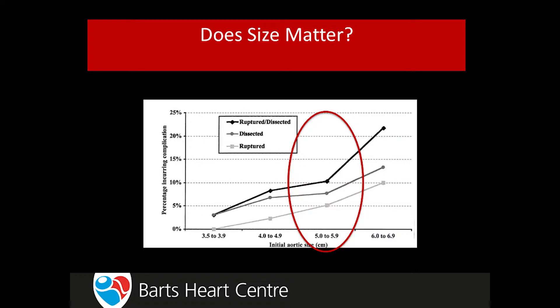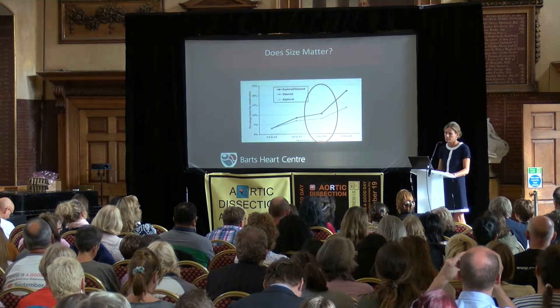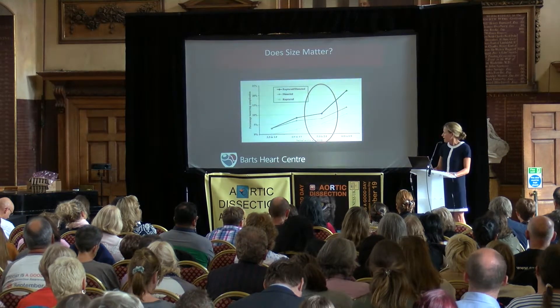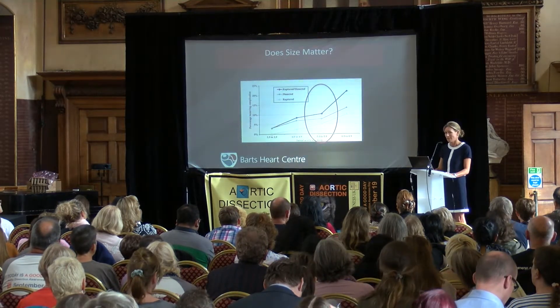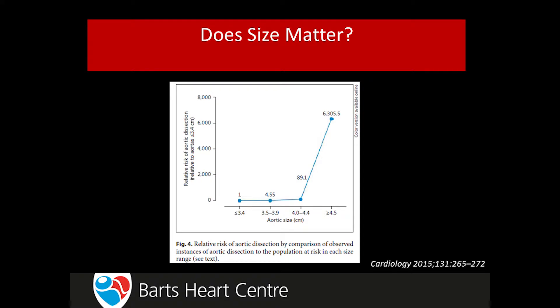Does size matter? There was good retrospective data from the 1990s from the Yale group showing a significant increase in risk of dissection as aortic size increased. That guided the initial guidelines that ascending aortas should be replaced at 5.5 centimeters. Dissections do happen at smaller sizes too, but looking at population risk, your relative risk of dissection is significantly higher with a larger aorta. However, patients who dissect with normal-sized aortas remain one of our challenges for future research.